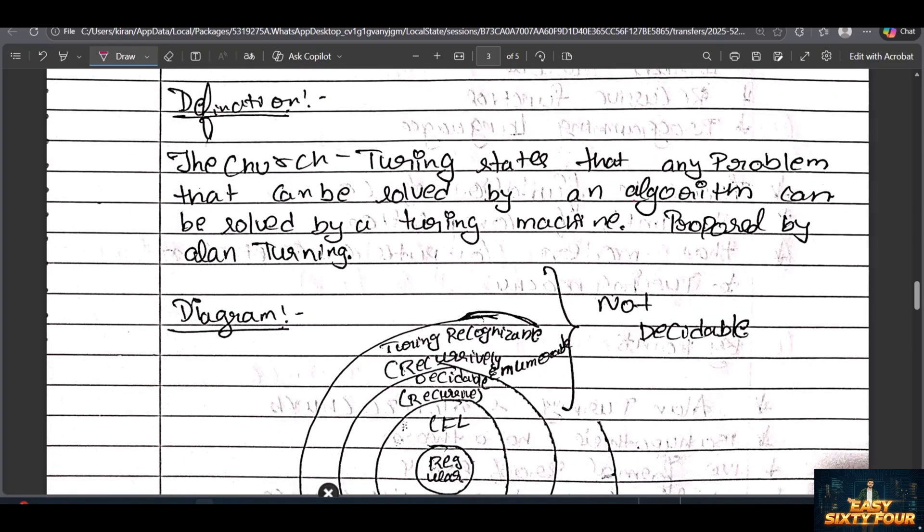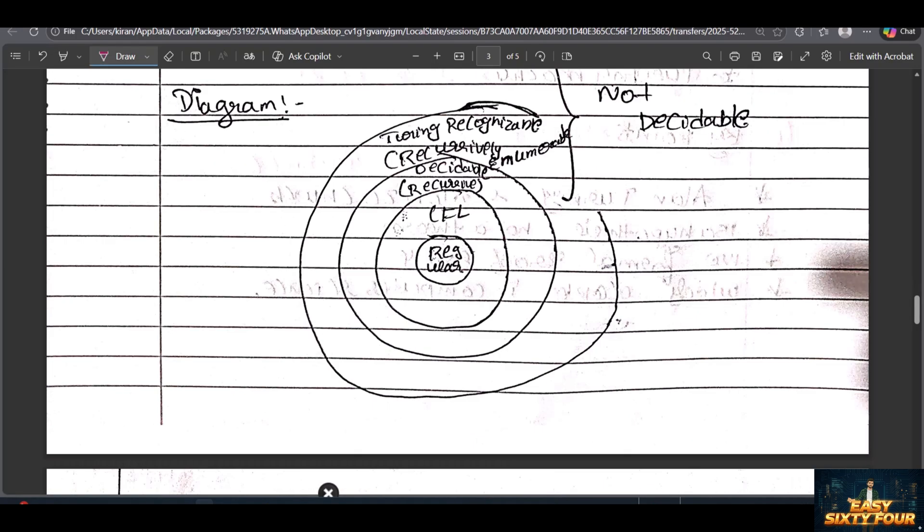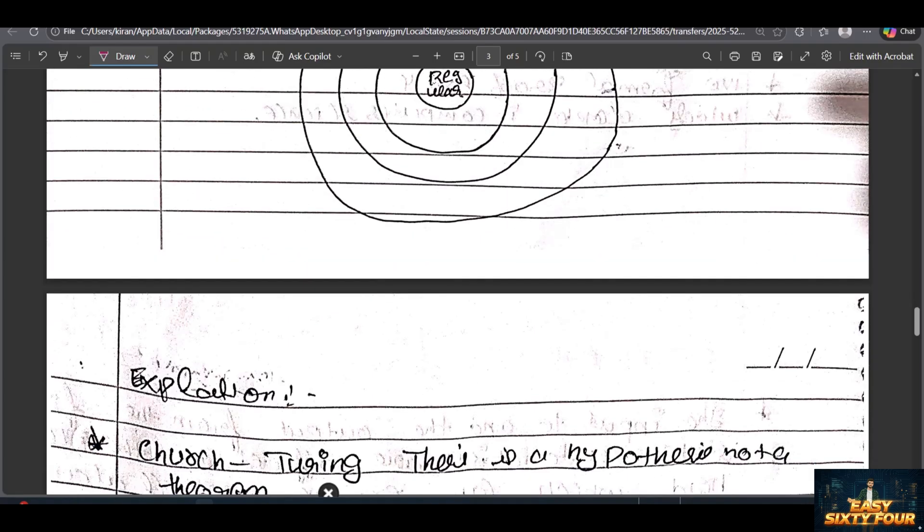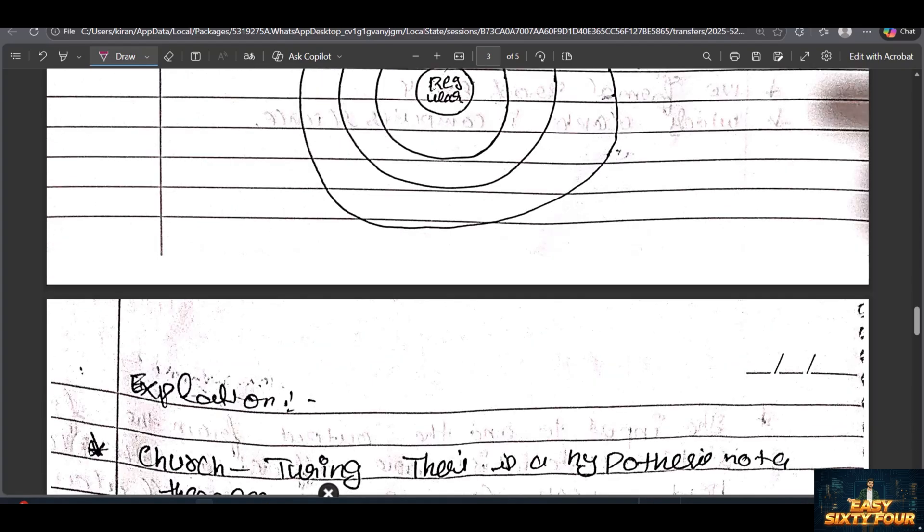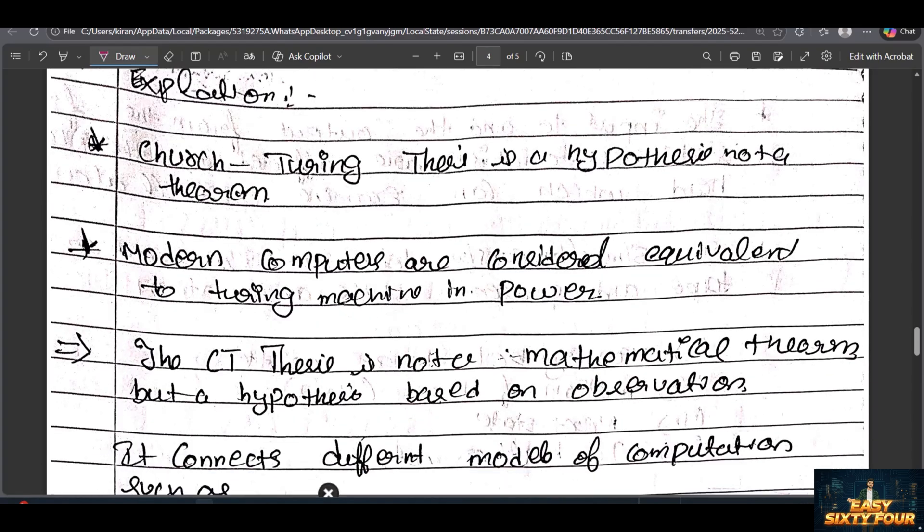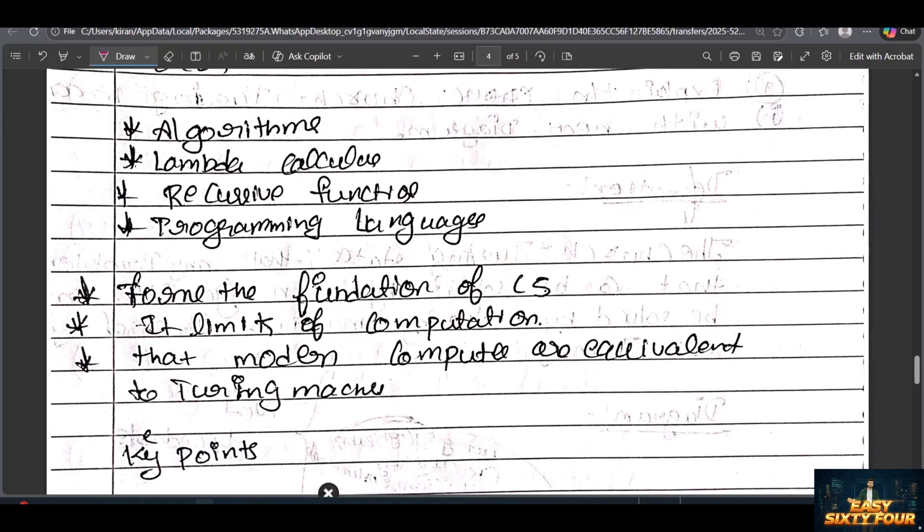Church-Turing thesis is basically a problem-solving technique that can be solved by Turing machines. That's the definition. After that, the diagram is more important because they will give marks based on your diagram. Practice the diagram and you can write the explanation easily. I will provide the PDF in Telegram.